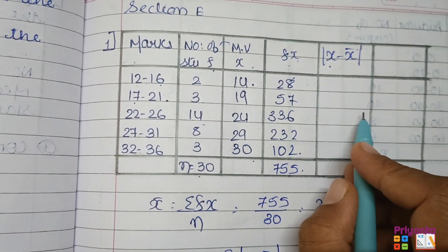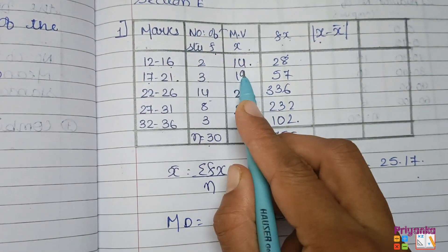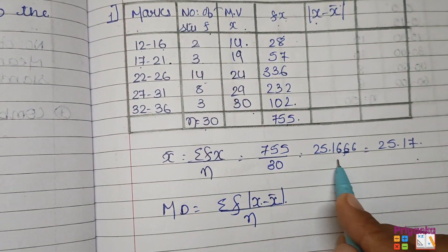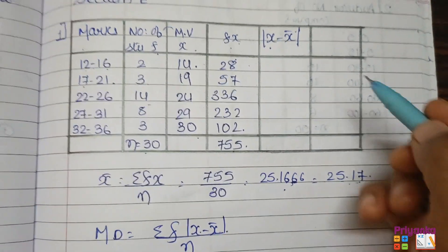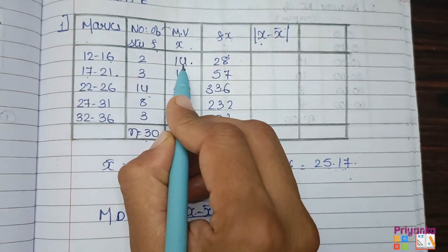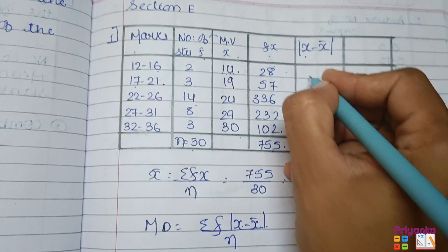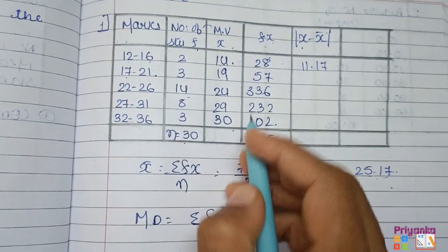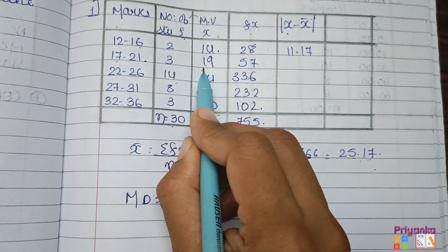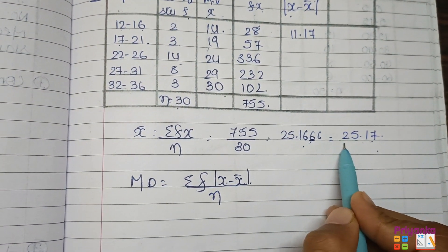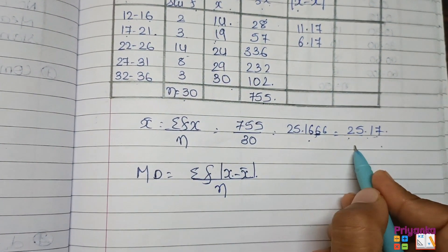First, take x as 14 and subtract x̄ which is 25.17. Type in your calculator 14 minus 25.17 — you will get 11.17. Next, 19 minus 25.17 gives 6.17. Then 24 minus 25.17 gives 1.17.